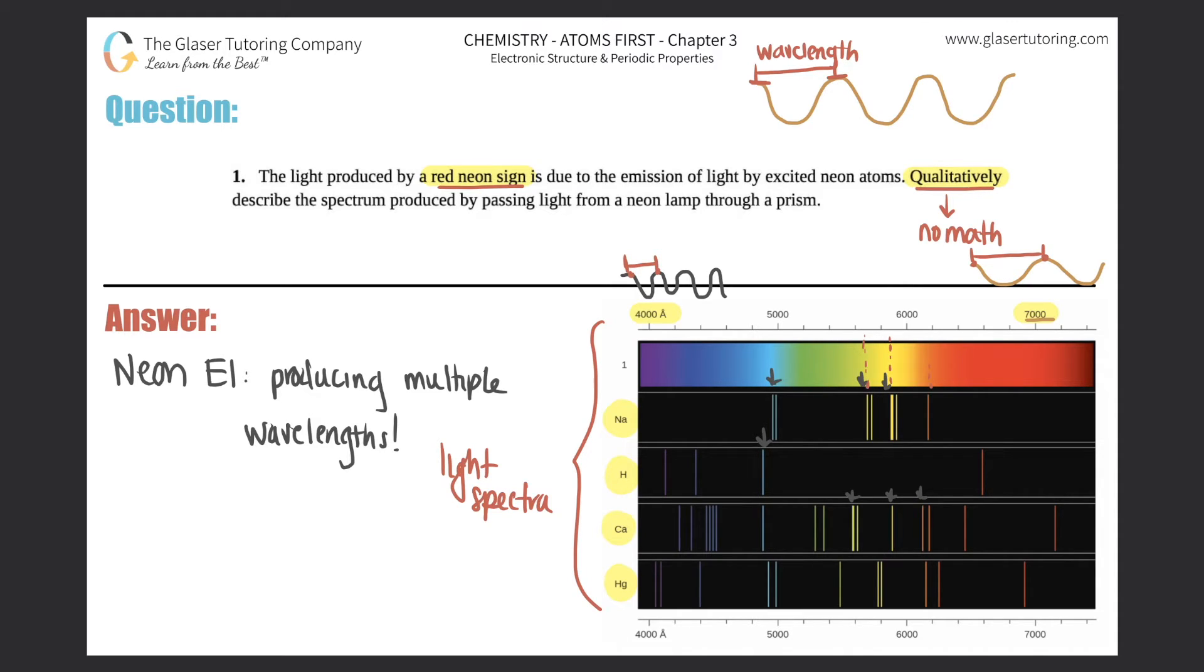So for a neon element, it will be producing multiple wavelengths. But now we just have to figure out which one would be the predominant one. Well, look at sodium. What color would you see if you looked at sodium? The predominant color would be the one that's the biggest line. And look at this line right here. You see how it's much bigger in size than all the other ones? So predominantly, sodium would be yellow.